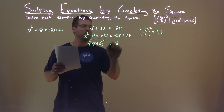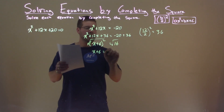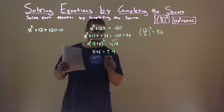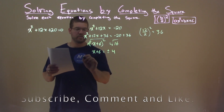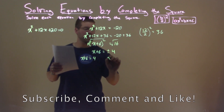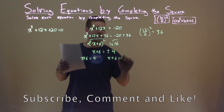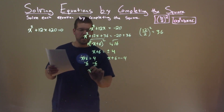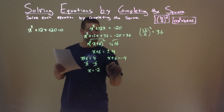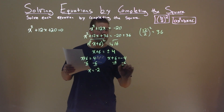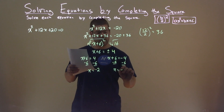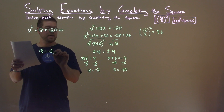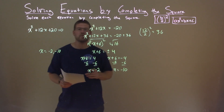We can take the square root of both sides, giving us x plus 6 equals plus or minus the square root of 16, which is 4. Breaking this into two equations: x plus 6 equals positive 4, and x plus 6 equals negative 4. Subtracting 6 from both sides: x equals 4 minus 6, a negative 2. Subtracting 6 again: x equals negative 4 minus 6, a negative 10. Our two solutions are x equals negative 2 and negative 10 — that is our final answer.